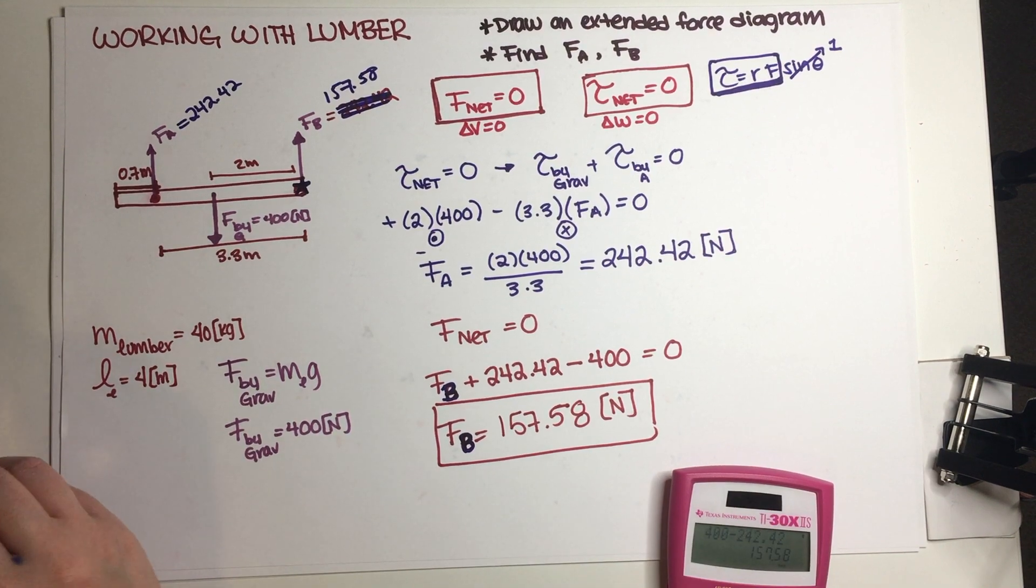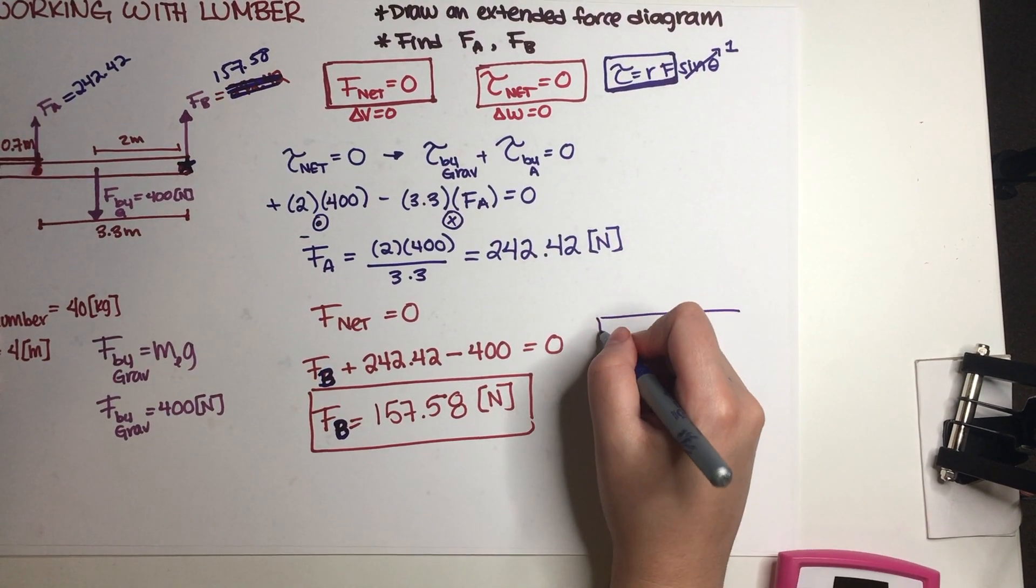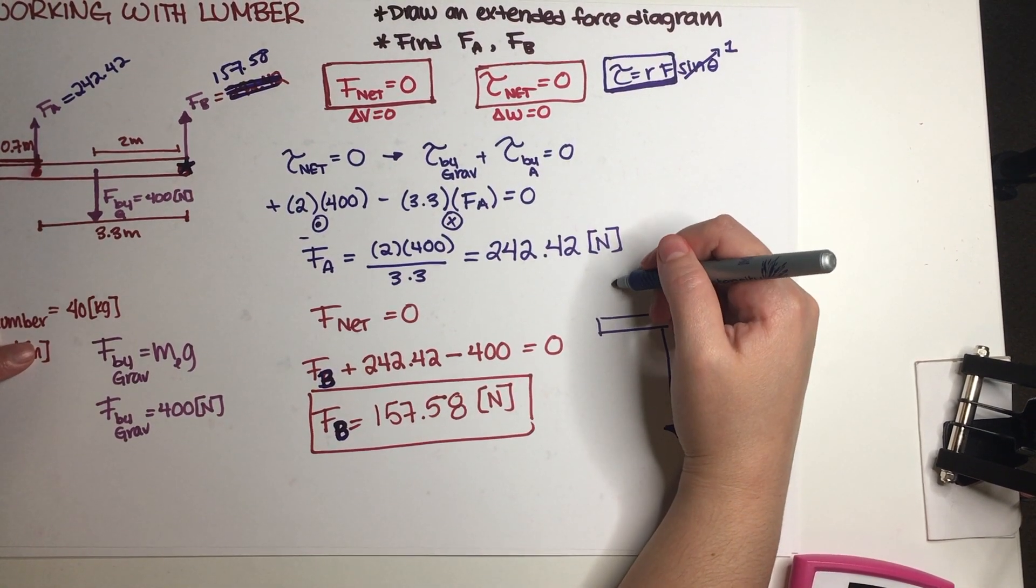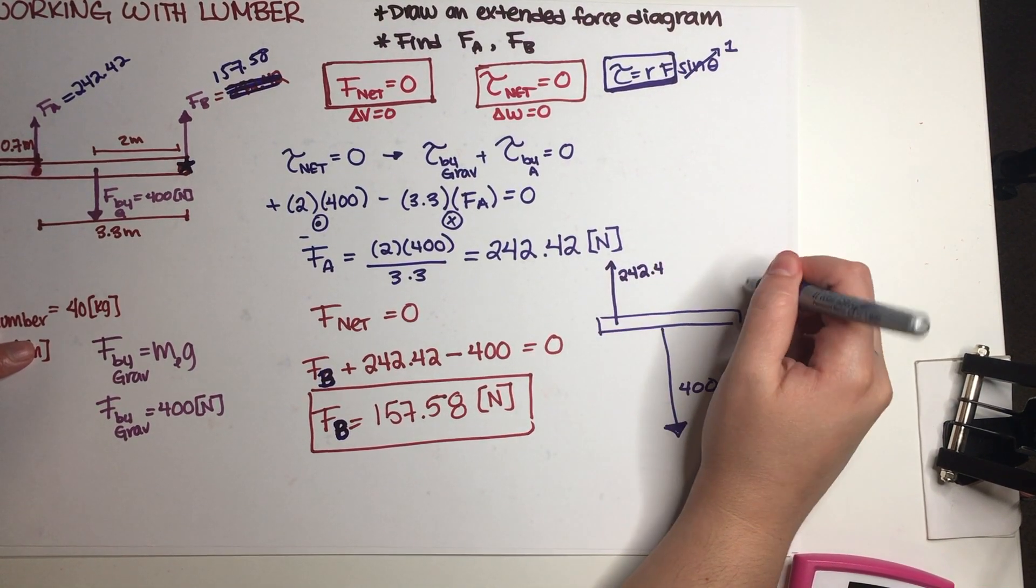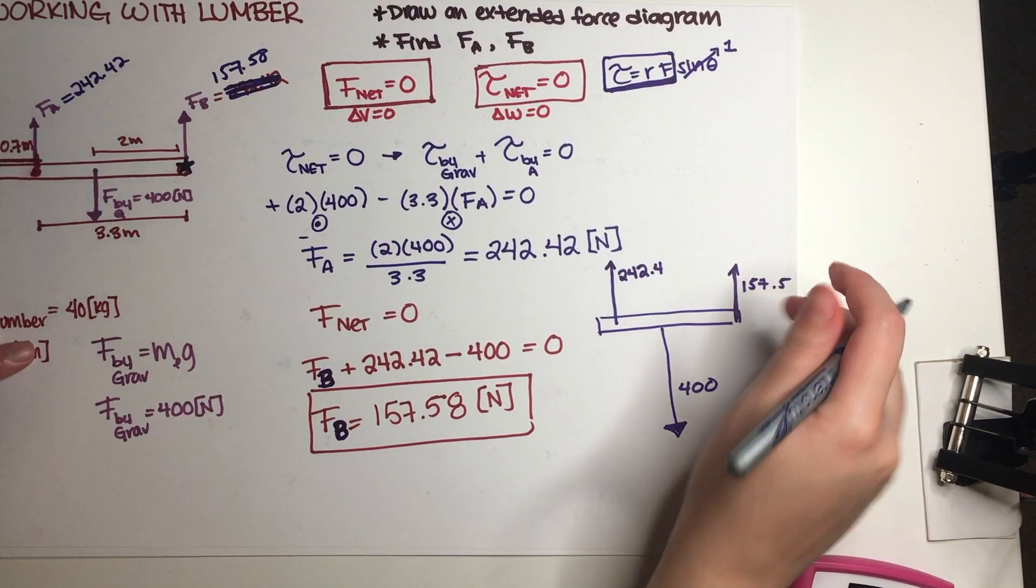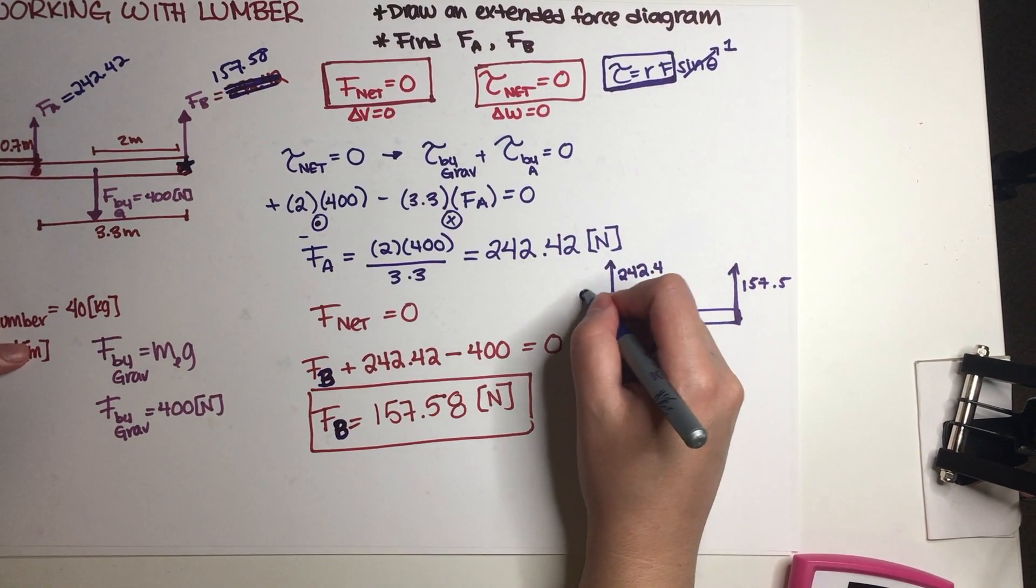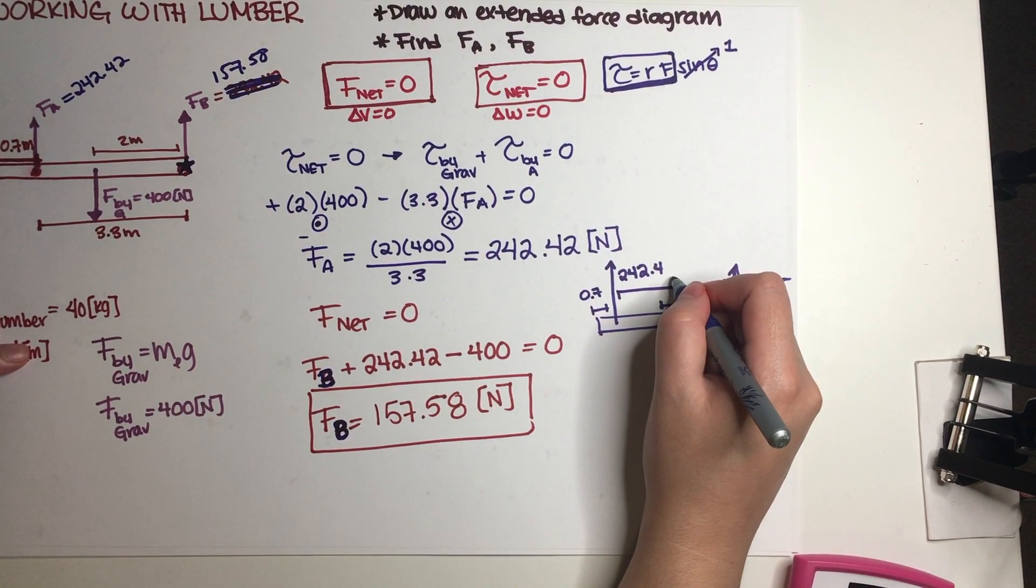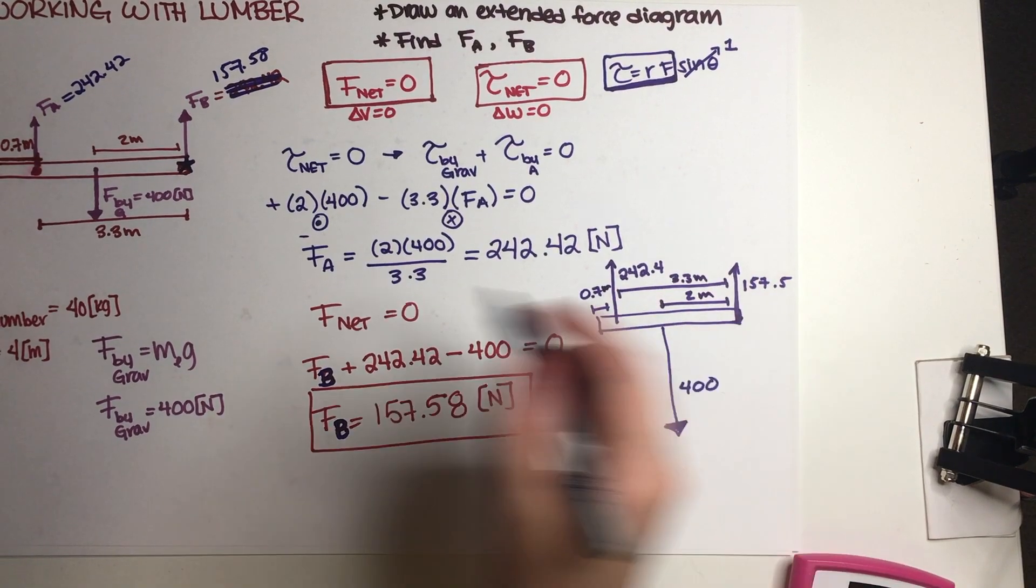So I guess we can just rescale this a little bit. You could just put a big 400 and then a 242 which is kind of big, and then a smaller one over here, 157.5. And then a complete extended force diagram has some distances, so 0.7, this is 2, this is 3.3 meters.